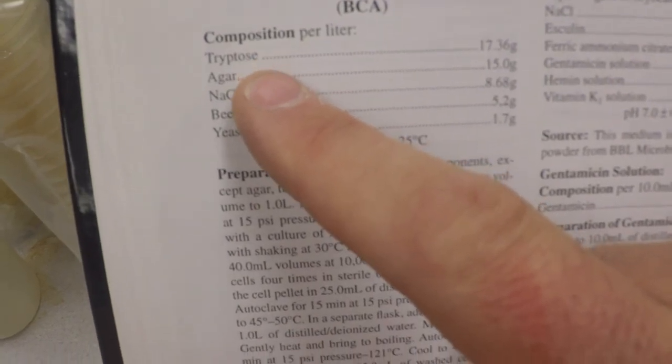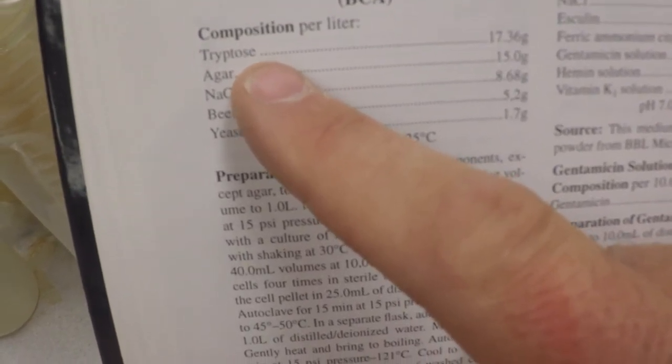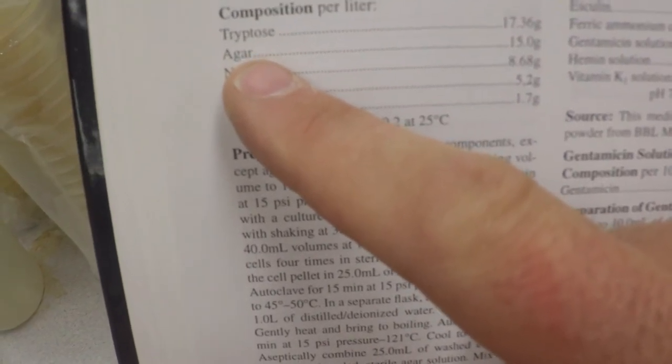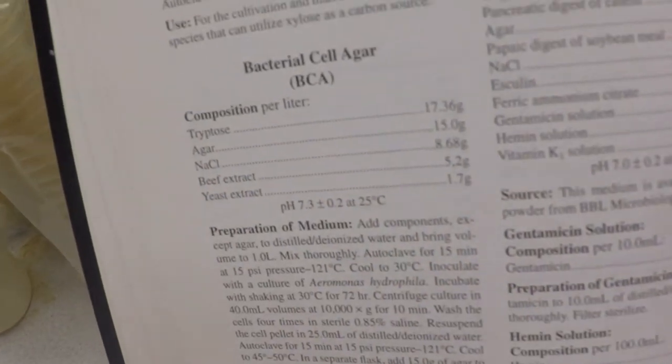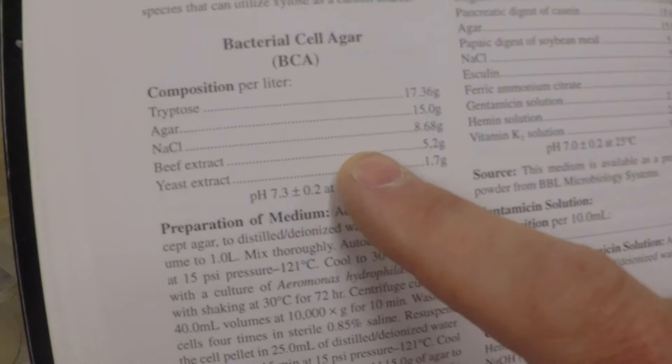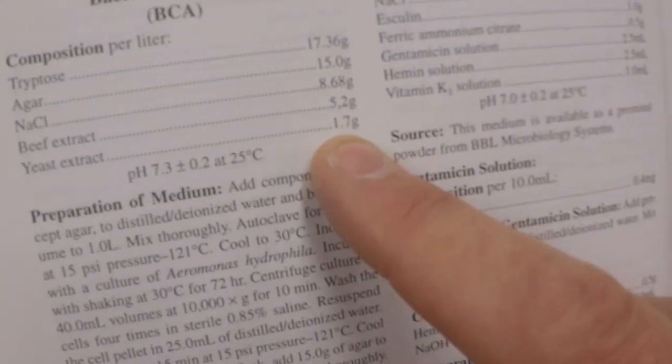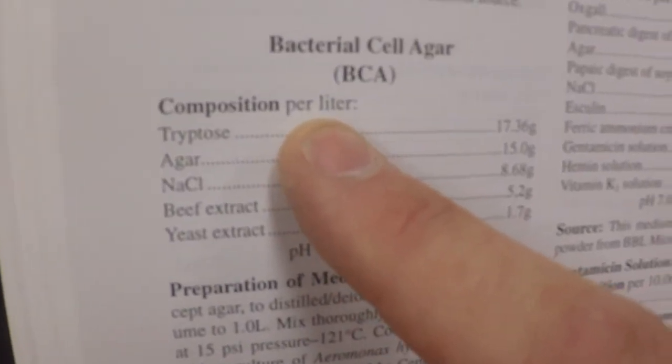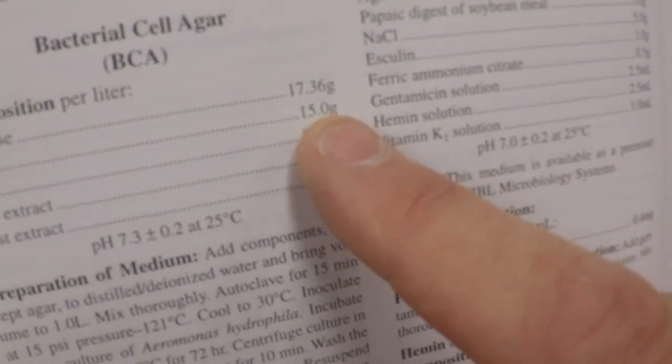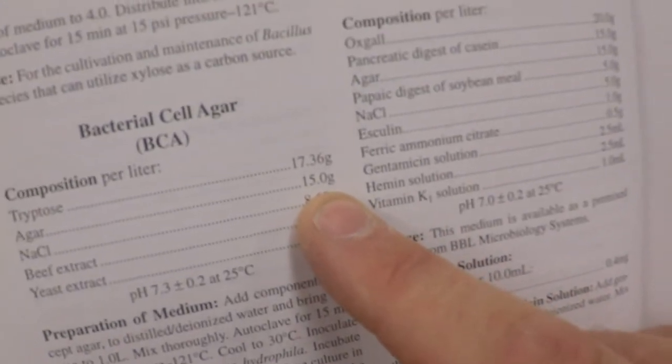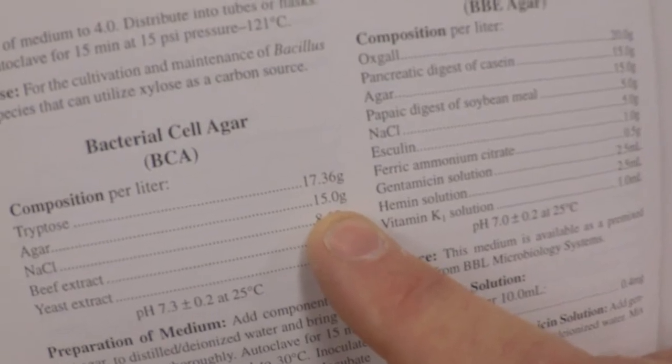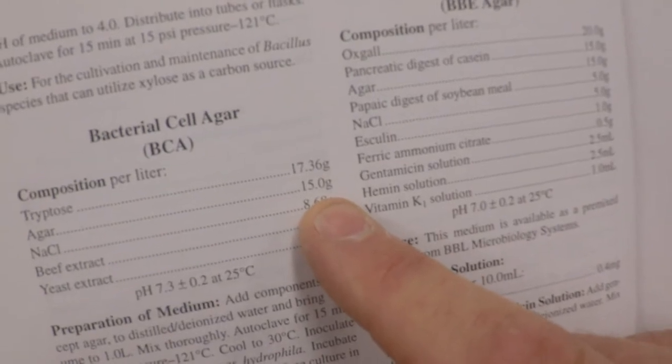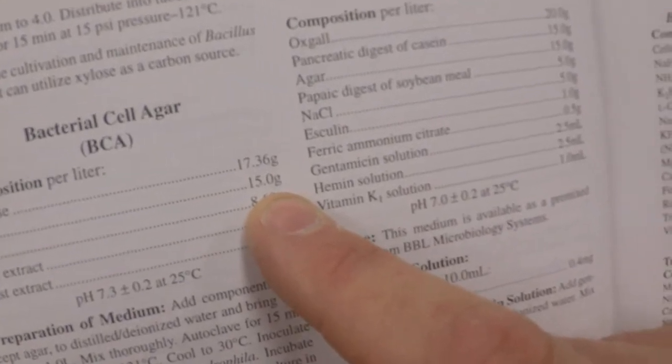Tryptose—same thing, that's a tryptic soy digest of beans. Tryptic agar is what you're going to use to solidify the plates if you're going to pour plates. If you're not pouring plates, you don't put agar in there. It gives you all the concentrations that you need. This is per liter. Typically, agar, 15 grams in a liter—that's 1.5% final weight per volume—is going to give you a nice petri dish plate.